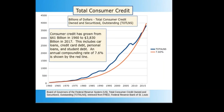Total consumer credit is the aggregate of consumer debt including car loans, credit card debt, personal loans, and student debt. Consumer credit has grown from $61 billion in 1960 to $3,830 billion in 2017, with an annual compounding rate of 7.6% — growing faster than the M2 money supply. The total consumer debt of around $4 trillion plus real estate mortgage debt of around $10 trillion roughly matches up with the M2 money supply.